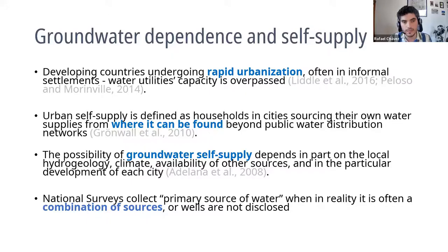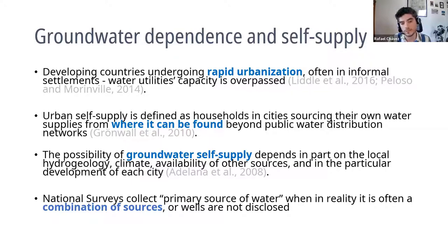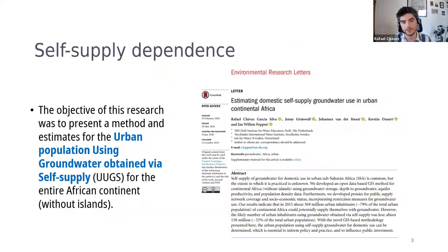We know that this use of groundwater is quite widespread; however, it's really underestimated when you look at the monitoring data, especially for SDG 6 and these international platforms. We find that the biggest reason for that is that national surveys collect the primary source for domestic water, where in reality it is often a combination of multiple sources, and so that's not reflected.